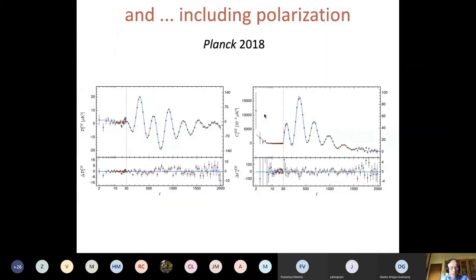You have here the TE and EE, that is temperature E-mode polarization cross correlation and E-mode only correlation, both in terms of angular power spectra still from Planck. Once again you see that there is a good best fit of the data which is physically motivated.